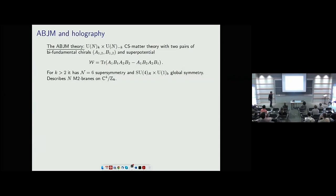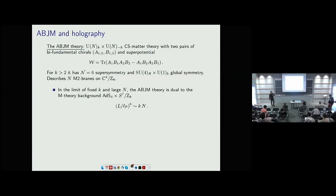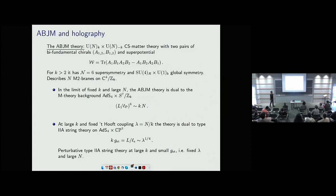There are at least two interesting large-N limits one can study. One is large N with fixed k, which should be dual to the M-theory limit where the bulk is AdS4 × S⁷/ℤk. And if you scale N and k both large but with fixed ratio, you are in the type IIA string theory limit. This map gives the string coupling and lambda — this should be a review for most of you.